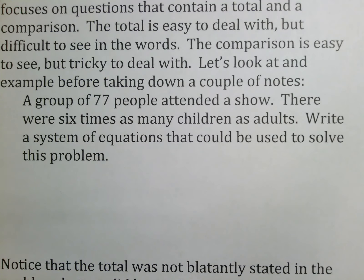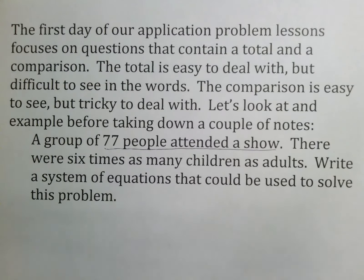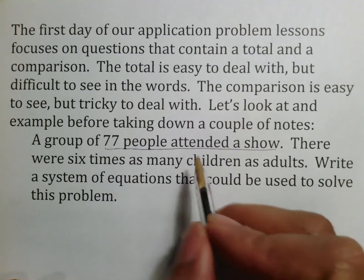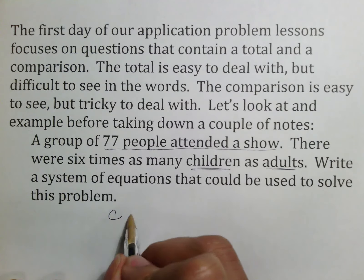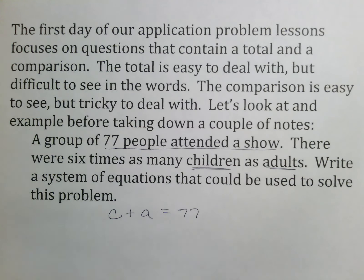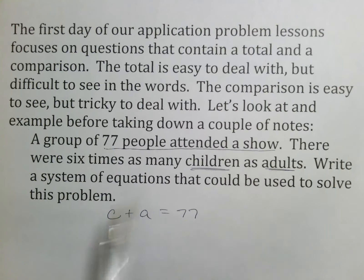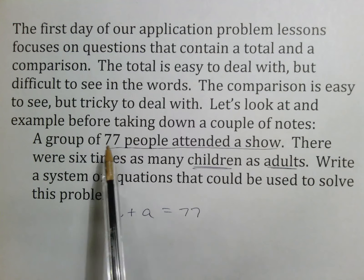The problem says: a group of 77 people attended a show; there were six times as many children as adults. Write a system of equations. When you see how many people attended a show, that represents your total. There are two types of people, so children plus adults equals 77. It doesn't say 'a total of 77' — it just says 77 people attended, so we have to recognize that.